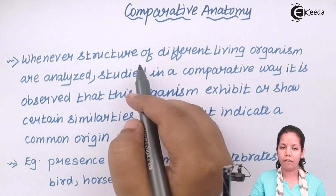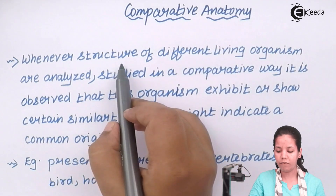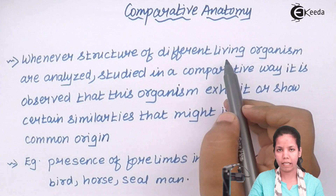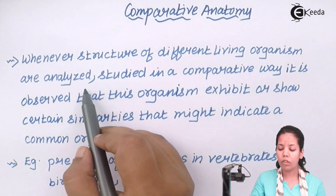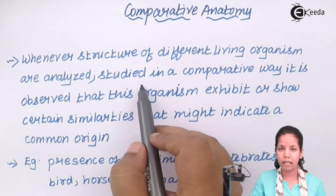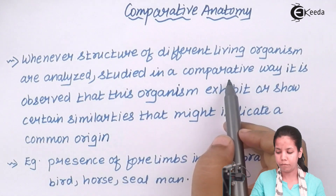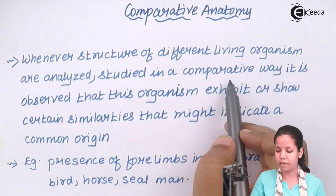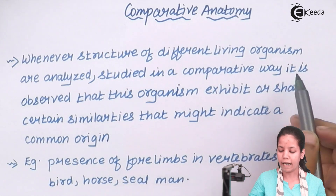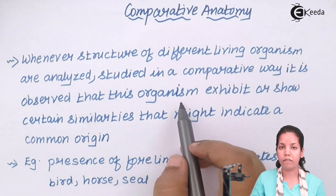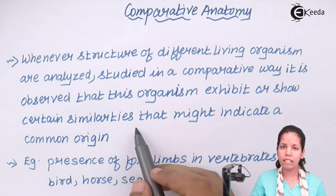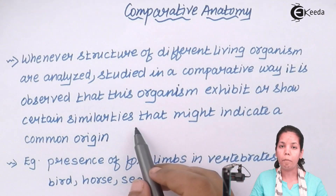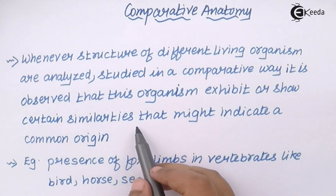The definition for comparative anatomy says that whenever structures of different living organisms or different living beings are analyzed or studied in a comparative way, it is observed that these organisms or these living species may exhibit or show certain similarities that might indicate that they belong to a certain common origin.